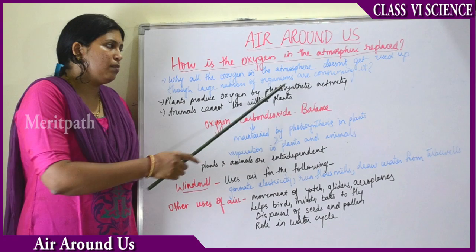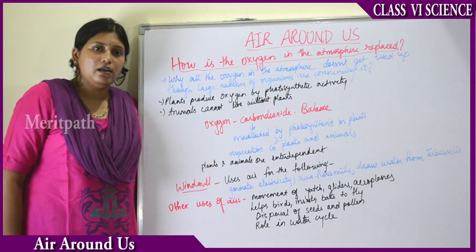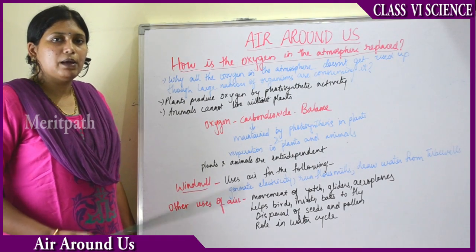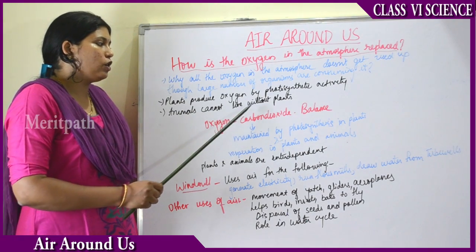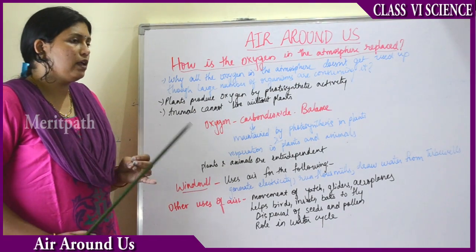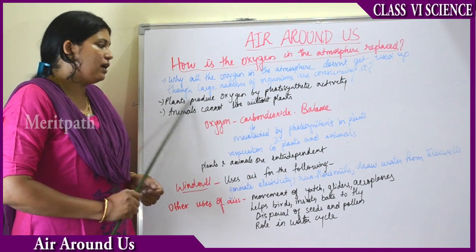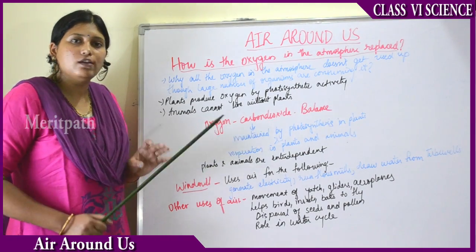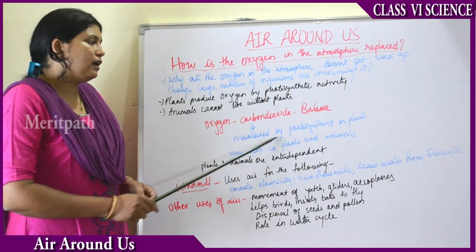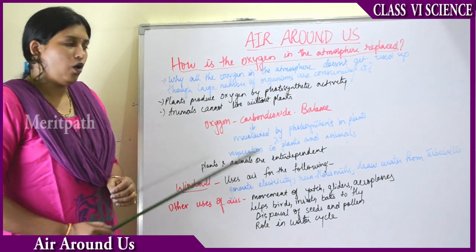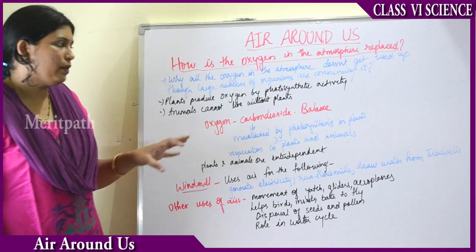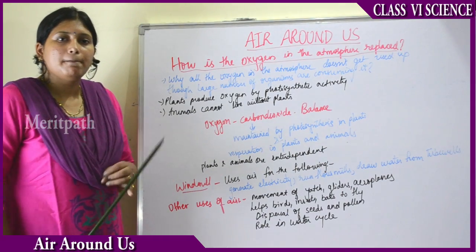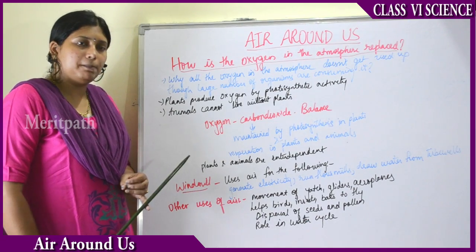Plants produce oxygen through photosynthetic activity. During the daytime when sunlight is present, plants take in carbon dioxide and produce oxygen. This is one way plants help maintain oxygen levels. Animals also depend on plants for their oxygen. The oxygen-carbon dioxide balance in the atmosphere is maintained by photosynthesis in plants.